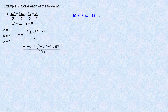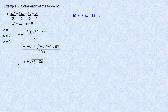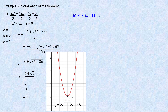We'll substitute the numbers in. Negative 6 goes here and here, 1 goes here in the denominator, and c is 9 at the end of the 4ac. So negative negative 6 is positive 6. Negative 6 squared is 36. And 4 times 1 is 4, times 9 is 36. So we've got 36 minus 36, which gives 0 underneath the root. The square root of 0 is just 0, so this is really just 6 divided by 2. There's no plus or minus, which means there is only one solution. Looking at the graph, the vertex just touches the x-axis — that's why there's only one x-intercept.